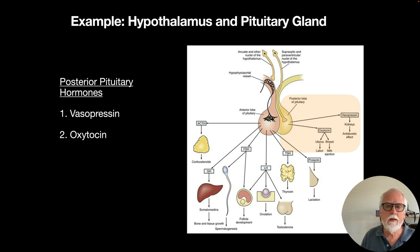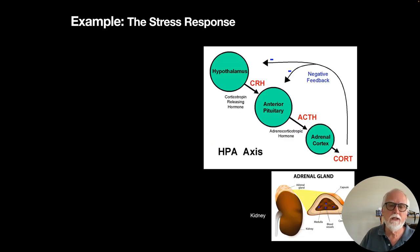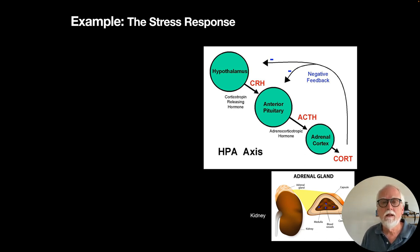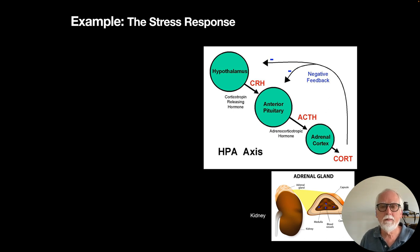Let's drill down on the HPA axis — the connection between the hypothalamus, pituitary, and adrenal cortex. The hypothalamus releases corticotropin-releasing hormone (CRH), which activates cells in the anterior pituitary that have receptors for CRH. Those cells then release adrenocorticotropic hormone (ACTH) into the bloodstream. When ACTH reaches the adrenal cortex sitting on top of the kidney, receptor cells there release glucocorticoids — most importantly, cortisol. H is for hypothalamus, P for pituitary, A for adrenal cortex.